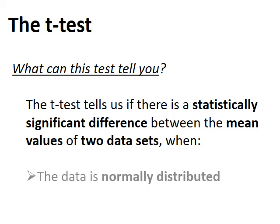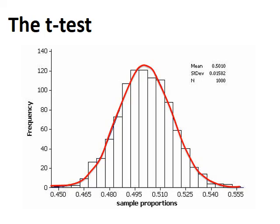We can use the t-test as long as the data within each of the two populations is normally distributed. If the data values from a population show continuous variation, the values measured are graded over a range from one extreme to another, with most values near to or around the mean value, and there's no bias to the left or right. We might get a bell-shaped curve, showing a normal distribution around the mean value.